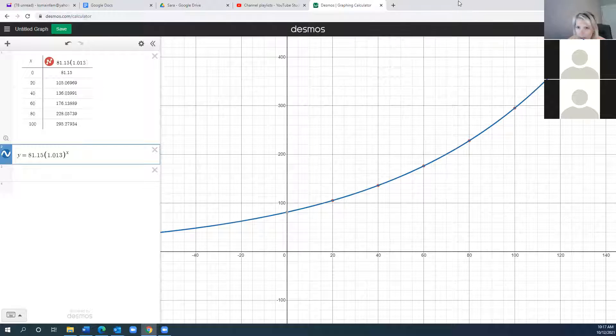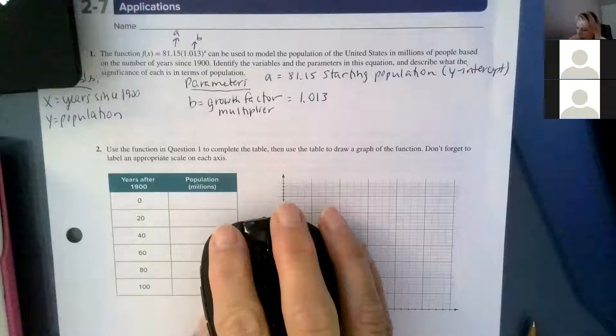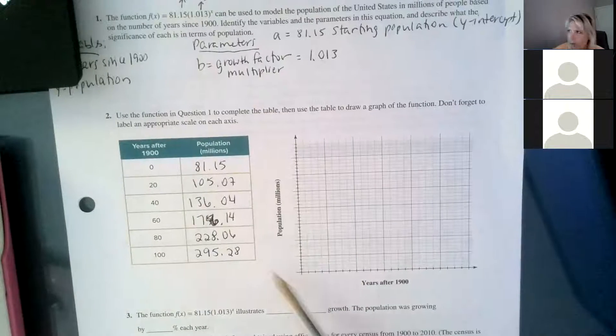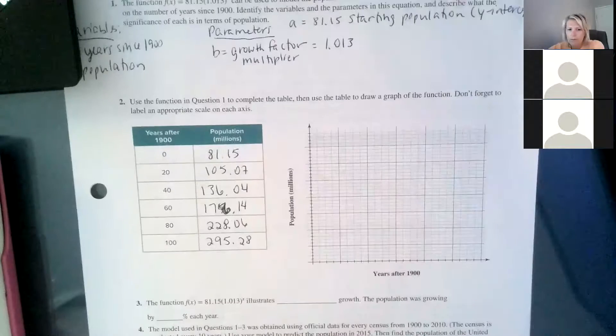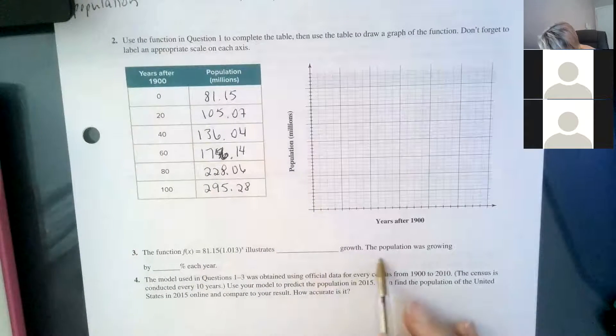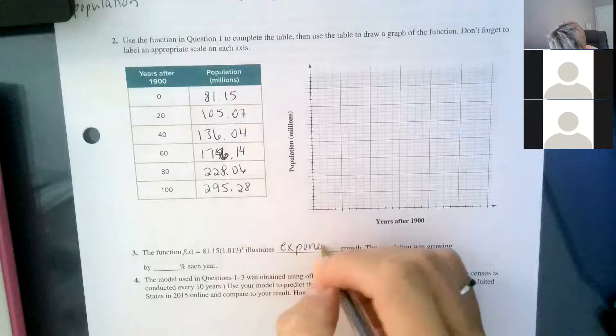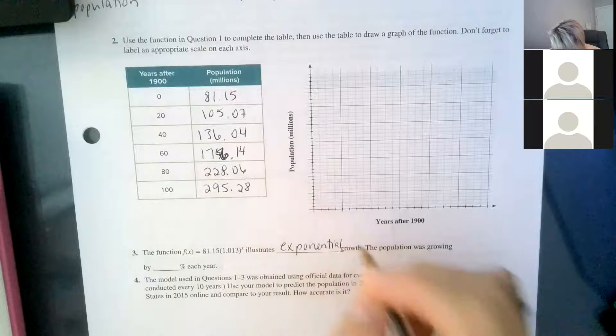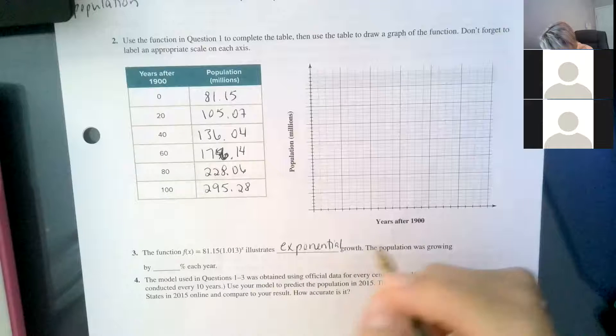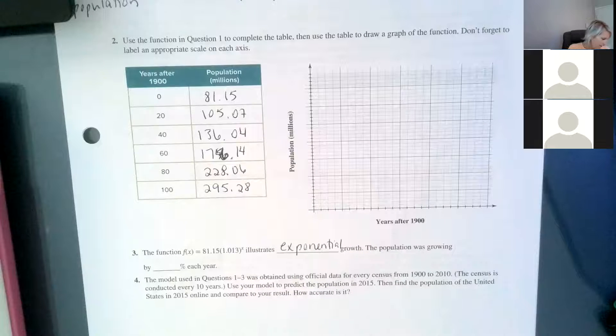Okay, so number three says back to my paper so everybody can follow along. So we filled in the table, we already have the graph. The graph, function f that we have here, illustrates exponential growth. The population was growing by what percent each year? So let's see if anybody can figure that out.